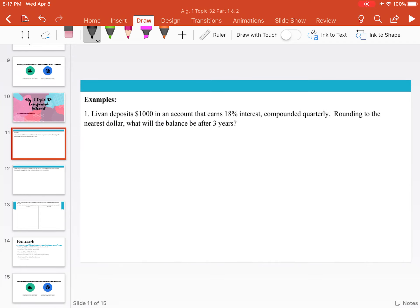Example number one: Levon deposits $1,000 in an account that earns 18% interest compounded quarterly. Rounding to the nearest dollar, what will be the balance after three years?